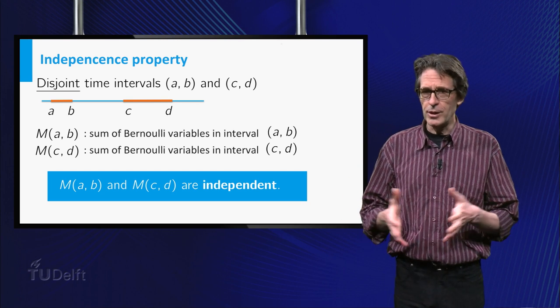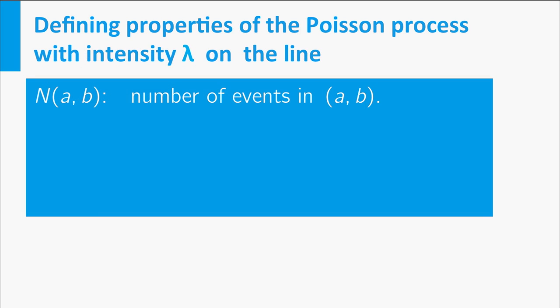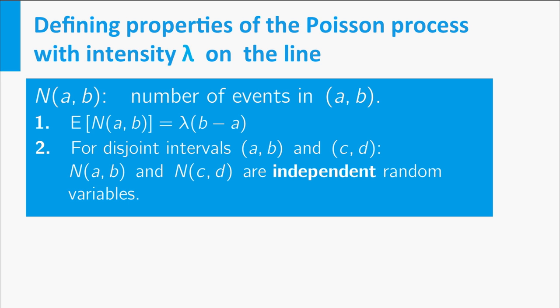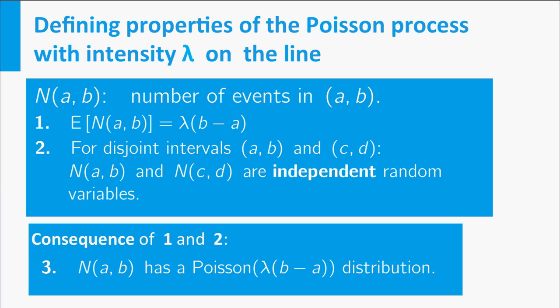Indeed, here is the definition. The Poisson process with intensity lambda is a stochastic point process on the line with the following two properties. First, the number of points in an interval (a,b), denoted by N(a,b), is a random variable with expectation lambda times b minus a. And second, the numbers of events in disjoint intervals are independent random variables. From this definition it follows that the number of events in a specified interval has a Poisson distribution.